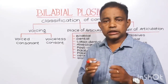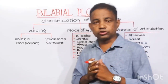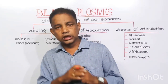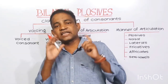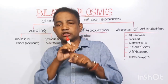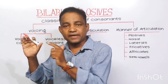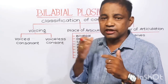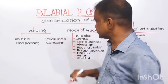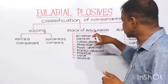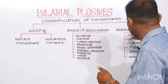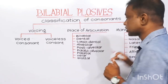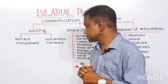Let me talk about the classification of consonants. Consonants are classified based on three dimensions. They are voicing, place of articulation, and manner of articulation.